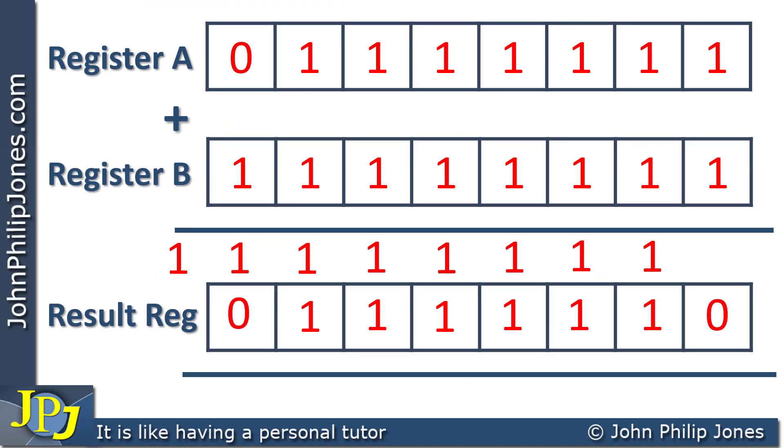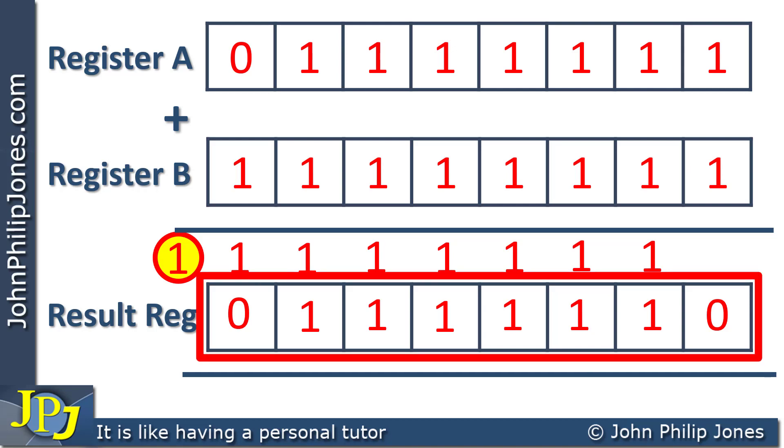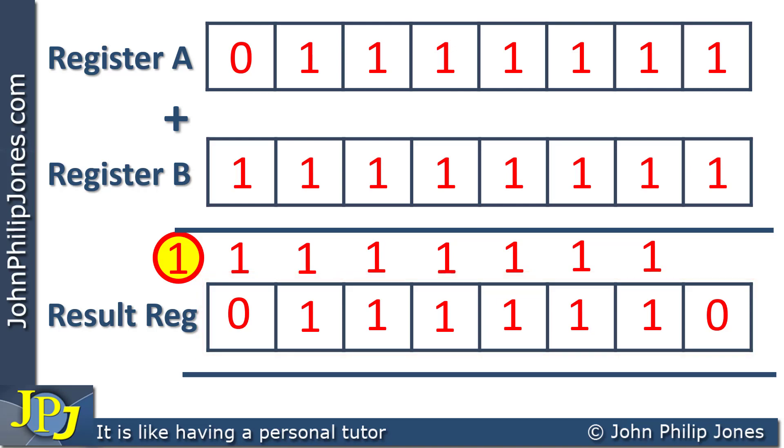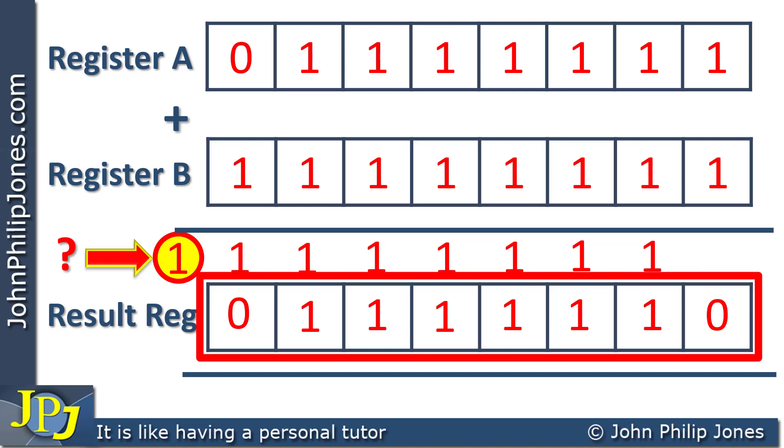Now we can see that the addition has resulted in this carry here. Now there is no room for that in this register, because the result is in fact a 9-bit result from the two 8-bit registers that we've added up. Now what do we do with this here? If there's no room for it to go in this register, what do we need to do with it?